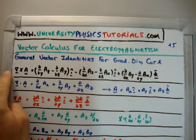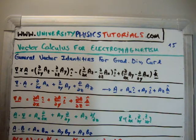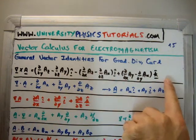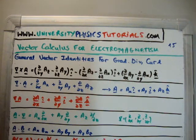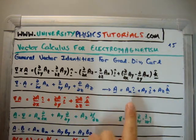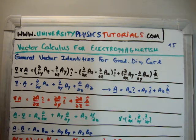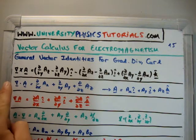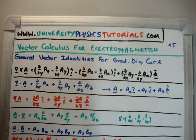It starts with the curl. I'm taking the curl of a vector field A. If you don't know how to do that, go look at my video number three where I showed you how to compute the curl. The important point to note is that the curl of a vector field gives you back a vector field — i-hat, j-hat, k-hat components. That is important. It's in contrast to taking the divergence of a vector field where you get back a scalar. Taking the gradient of a scalar field will give you back a vector field — that's very important as well.